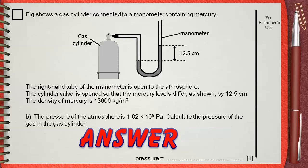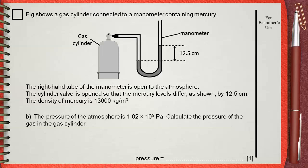In the previous question we only calculated the pressure due to the 12.5 cm of mercury. But above the 12.5 cm of mercury there is the normal atmospheric pressure.